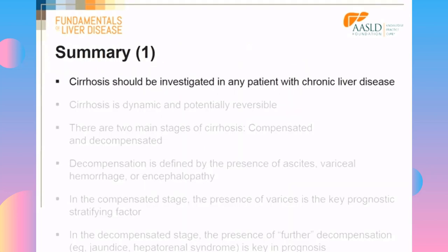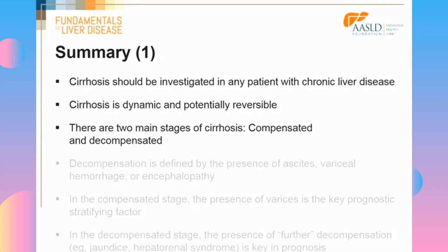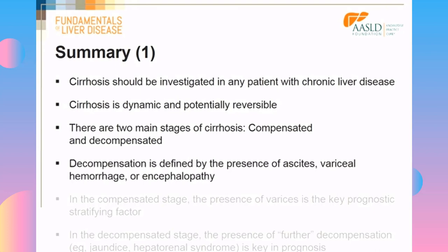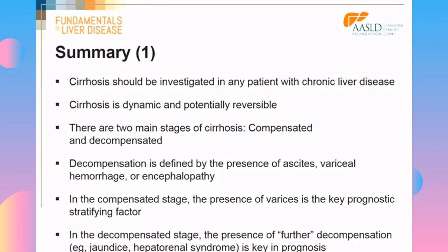In summary: cirrhosis should be investigated in any patient with chronic liver disease; cirrhosis is a dynamic process and can be potentially reversible; there are two main stages — compensated and decompensated. Decompensation is defined by clinically evident complications: ascites, variceal hemorrhage, or encephalopathy. In the compensated patient, the presence of varices is a key prognostic stratifying factor. In the decompensated stage, the presence of further decompensation is key to prognosis.